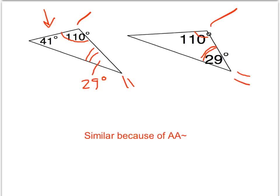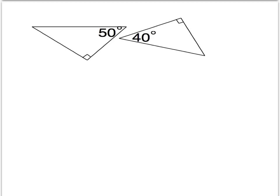And so these two triangles are similar because of AA. In a similar way to the previous problem, these two triangles have right angles, and one has 50 degrees while the other has 40 degrees. However, the triangle sum theorem says that 90 plus 50 plus some other angle must add up to 180, so that angle is indeed 40 degrees. So we have two triangles with at least two angles congruent — both have 90 degrees and both have 40 degrees — and so these triangles are indeed similar by AA similarity.